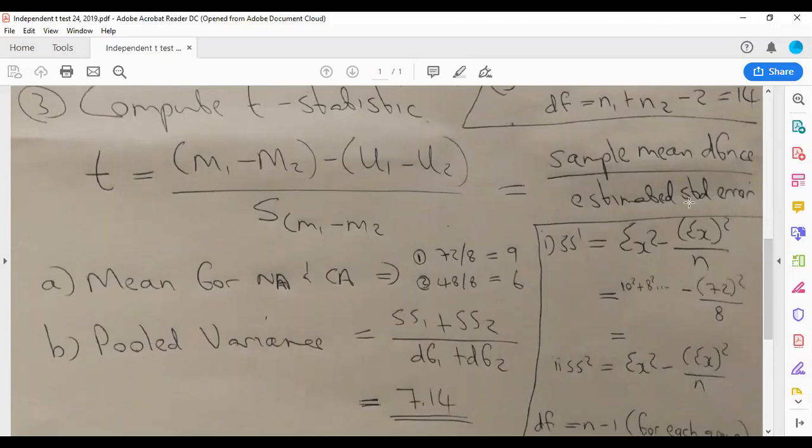To calculate that, the first step is to calculate the variance for each group. So the formula for variance is sum of x squared—sum of squared x's minus sum of x squared—divided by n. It means that 10 squared, 8 squared, 7 squared, 9 squared, you add that.